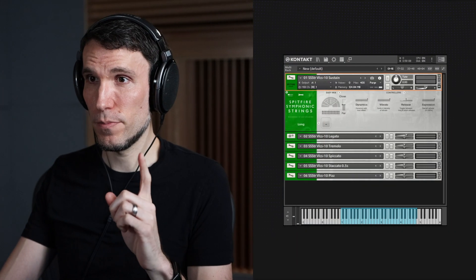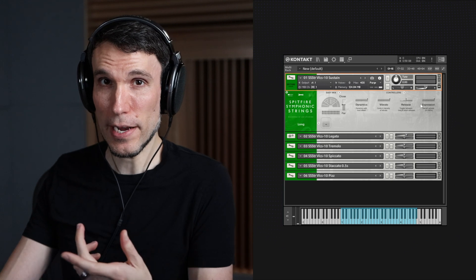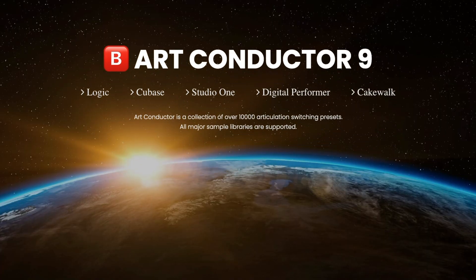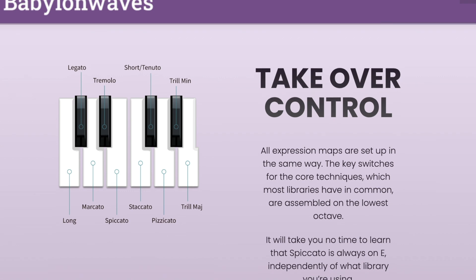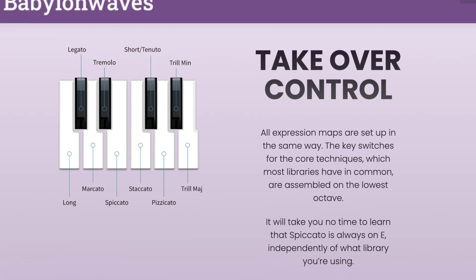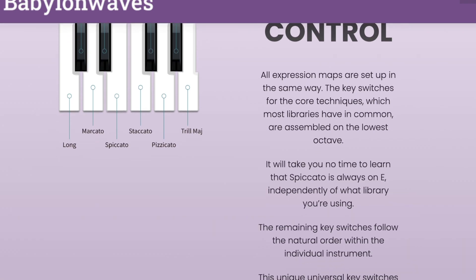I'd seriously think about starting off with just a few of the most important articulations to get yourself going. Or if you know you won't even have time to do that, consider starting with what somebody's already built up for you. The most complete set of articulation presets that I know about is Babylon Waves Art Conductor. These are not free and I don't use them myself, but I know a lot of composers who do and really love them. So if they're set up in a way that you like, take a look, because this could save you a huge chunk of time.